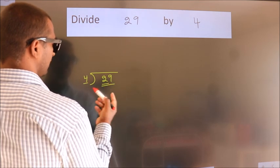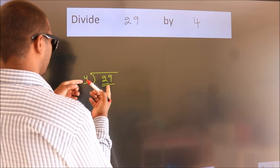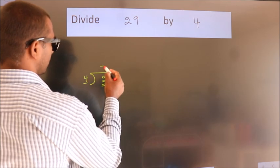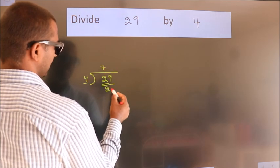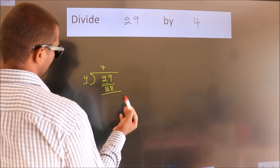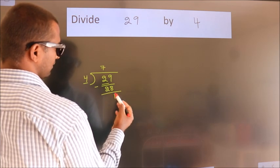29. A number close to 29 in the 4 table is 4 times 7 equals 28. Now we subtract and we get 1.